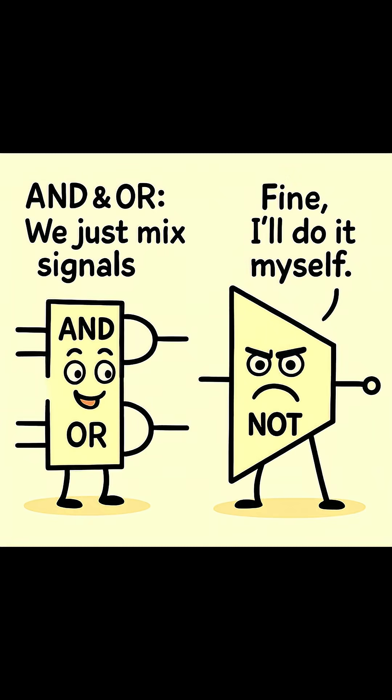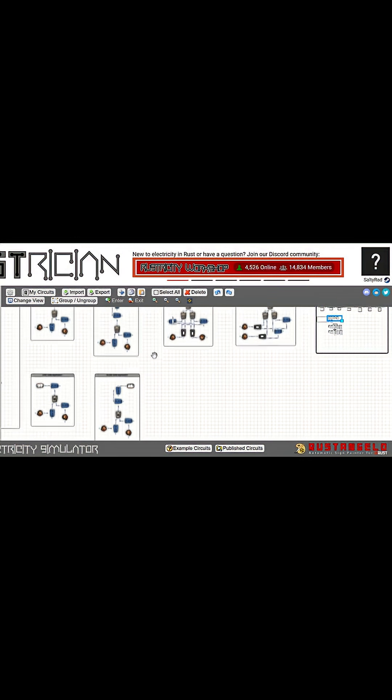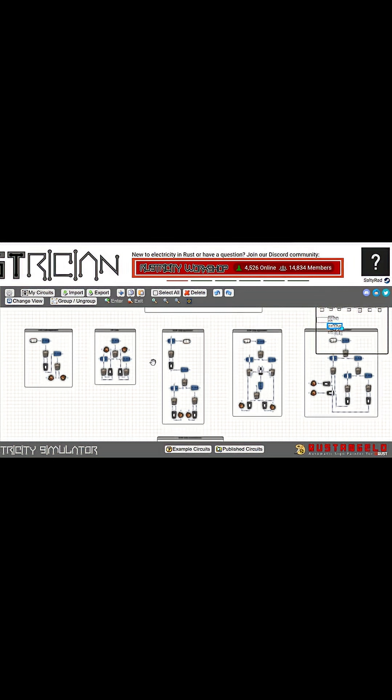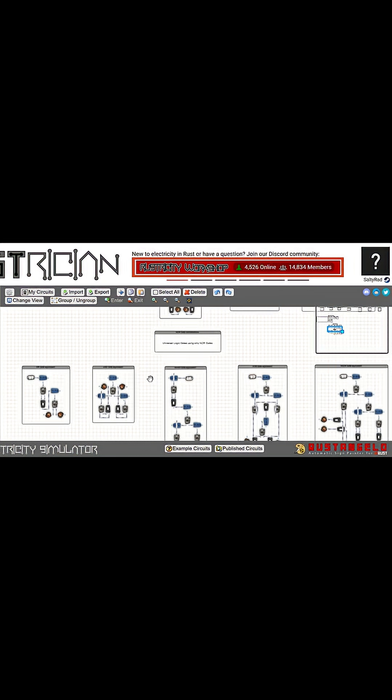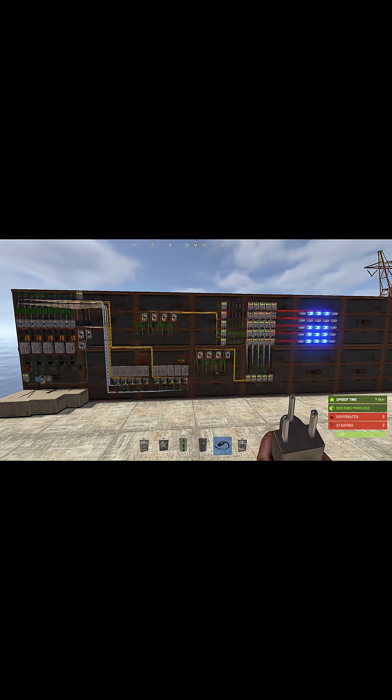The NOT gate introduces decision logic based on absence of power, not just its presence. This is the turning point in logic design. Once you can invert, you can begin crafting your own custom gates and intelligent behaviors.